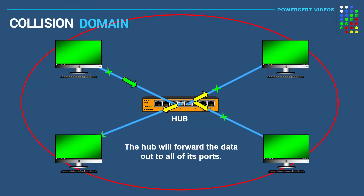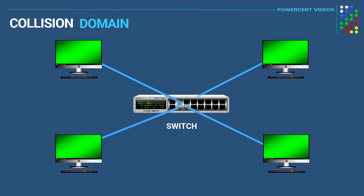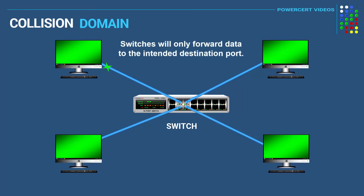Instead of having one big collision domain, we can reduce the chance of having collisions by breaking it down into smaller collision domains. This is why switches were created. Switches are a lot better than hubs — switches will not forward the data out to all of its ports; they'll only forward data to the intended destination port.